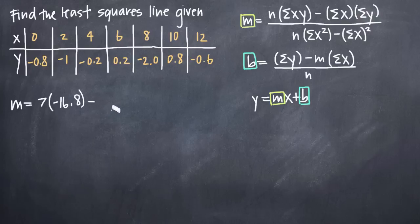Then according to our formula, we're going to subtract what we get when we add all of the x values together. So 0 plus 2 plus 4 plus 6 plus 8 plus 10 plus 12 is 42. That's the sum of all the x's. And then here, the sum of all the y's is negative 0.8 plus negative 1 plus negative 0.2, etc. When we add all those together, we'll get negative 3.6.